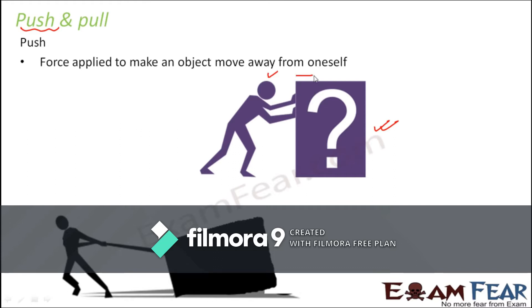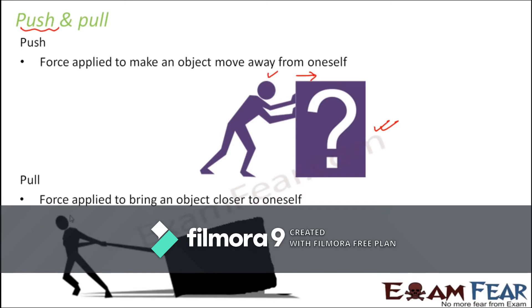If we are applying force to make an object move and bring it closer to ourselves, that is called pull. Here, this person is trying to pull the box towards himself. Whenever we try to bring something close to us, that is pull. Whenever we try to make something move away from us, that is push. Force is all about these kinds of actions — pushing an object, pulling an object, lifting an object — and in all these scenarios you are applying a force.